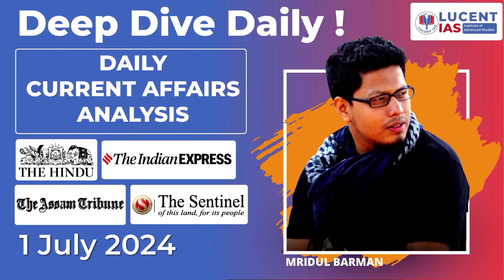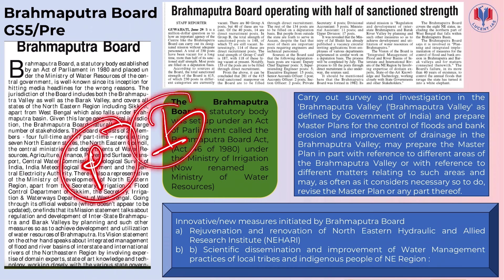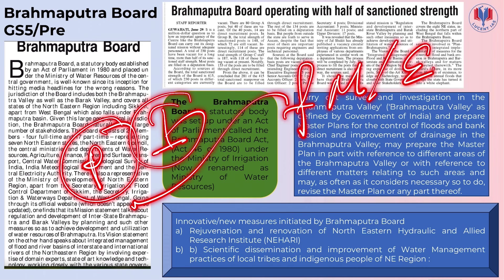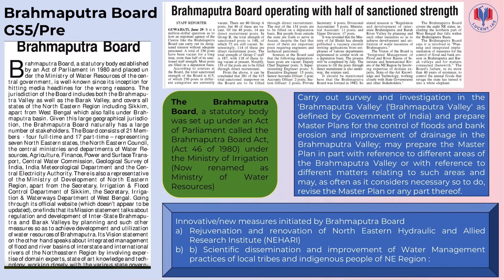Today, 1st July, our topic is the Brahmaputra Board. The Brahmaputra Board is very important for GS5 paper. It is an autonomous statutory board which is responsible for preparation and implementation of plans related to flood management, erosion control, drainage, etc. It was established in 1980 and started functioning from 1982.